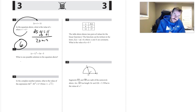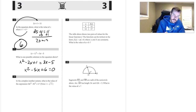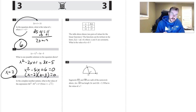Number seventeen: foil to get x squared minus 2x plus 1 equals 3x minus 5. Bringing everything to one side gives x squared minus 5x plus 6 equals 0. Factoring: (x minus 2)(x minus 3) equals 0, so x equals 2 or x equals 3.